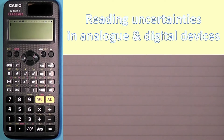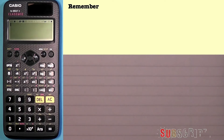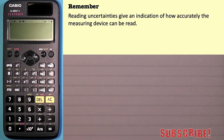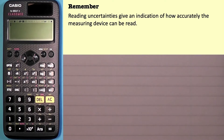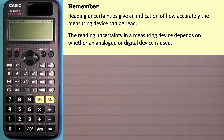In this video we're going to be talking about reading uncertainties in analogue and digital devices. Reading uncertainties give an indication of how accurately the measuring device can be read. Most importantly, the reading uncertainty in a measuring device depends on whether an analogue or digital device is used.